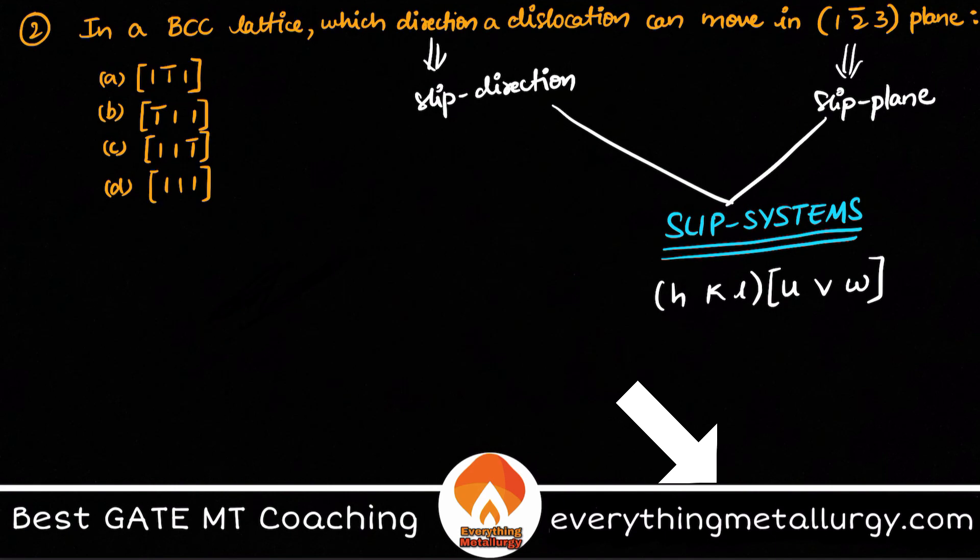So forget about dislocation, forget about BCC, any particular plane. Even if you take it in a mathematical way, any particular plane its normal is denoted by the same thing. A plane is denoted by its normal, of course in a 3D coordinate system. That is why cubic systems have this notation that a plane is actually denoted by its plane normal, and both of them have same indices (h k l).